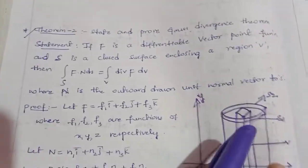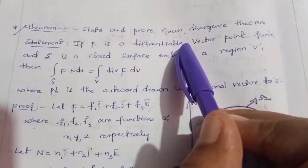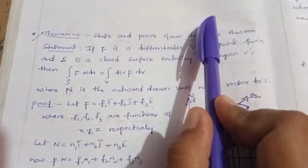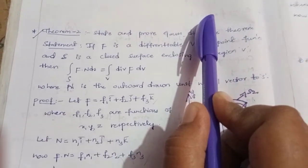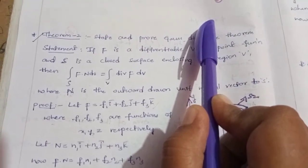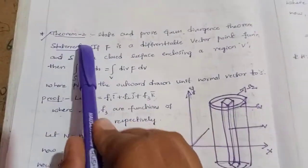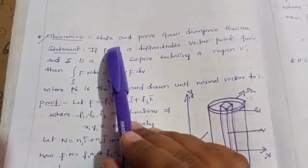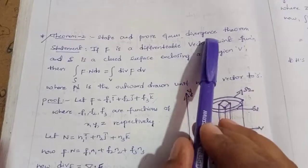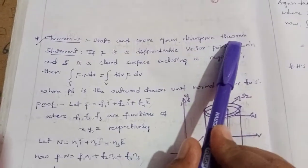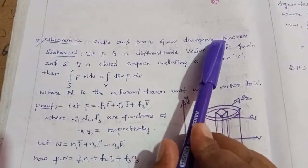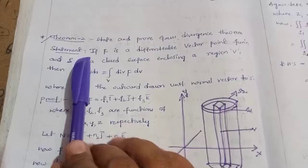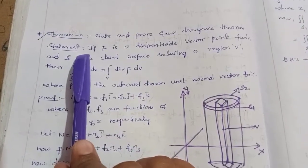So in this class, Green's Divergence theorem. This is the first statement. What is the theorem? State and prove Green's Divergence theorem. Every statement has two marks.